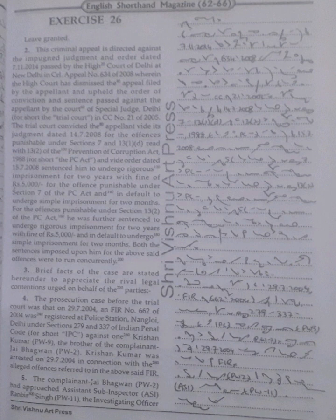Delhi, under Sections 279 and 337 of Indian Penal Code, for short IPC, against one Krishan Kumar (PW9), the brother of the complainant Jai Bhagawan (PW2). Krishan Kumar was arrested on 29th July 2004 in connection with the alleged offences referred to in the above said FIR.